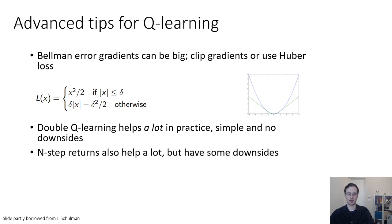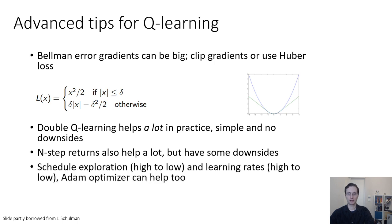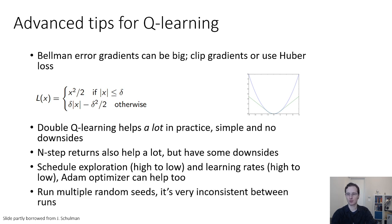N-step returns can help a lot, especially in the early stages of training, but they do have some downsides because N-step returns will systematically bias your objective, especially for larger values of N. Schedule exploration and schedule learning rates. Adaptive optimization rules like Adam can also help a lot — older work used RMSProp, which doesn't work as well as Adam. When debugging, make sure to run multiple random seeds because you'll see a lot of variation. The algorithm is very inconsistent between runs, and a fluke can be either unusually bad or unusually good.